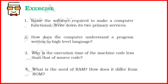Now write down its two primary services. You can write that the operating system acts as a resource manager — it allocates the required resources to different processes and different components of the computer system. You can also write any of the four services provided by the operating system, including process management, memory management, file management, or device management. We have discussed all these things in the previous videos; you can refer to the playlist.